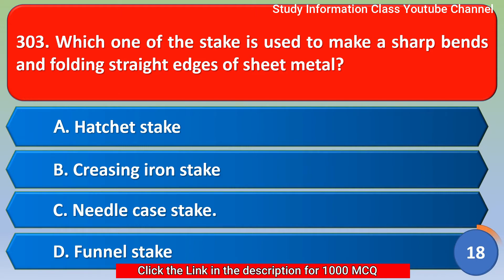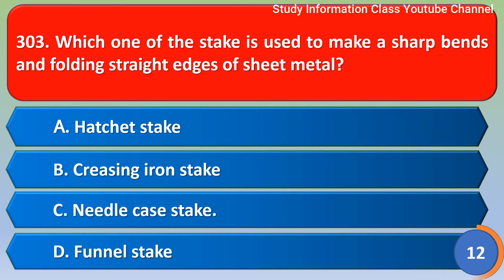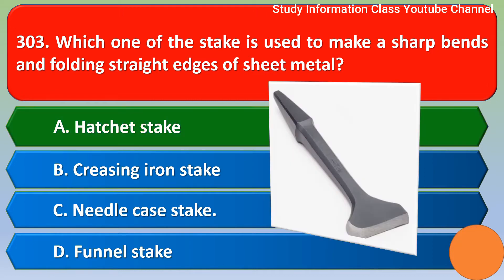Next question: which one of the stacks is used to make sharp bends and folding straight edges of sheet metal? Option A: hatch stack, Option B: freezing iron stack, Option C: needle case stack, Option D: funnel stack. The correct answer is Option A, hatch stack. Option A is the right answer.